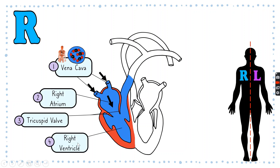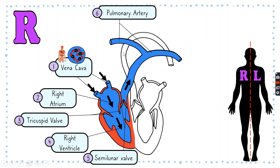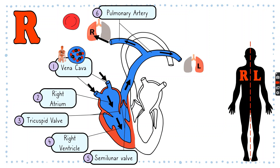Moving on, we have the right ventricle, then the semilunar valve, and going up is the pulmonary artery. On the right-hand side of the heart it contains deoxygenated blood — that's why we color it blue. Deoxygenated means that there's less oxygen and more carbon dioxide.